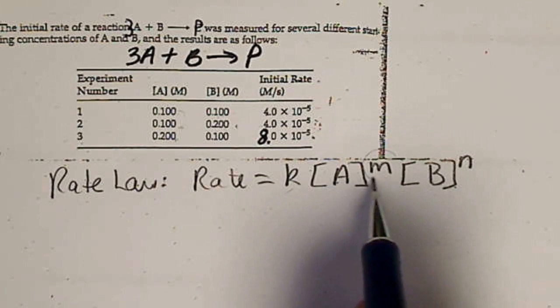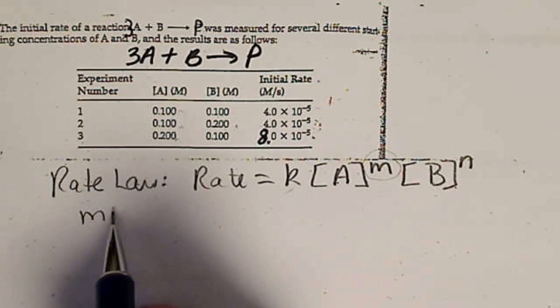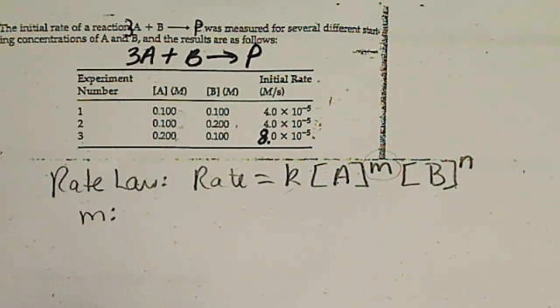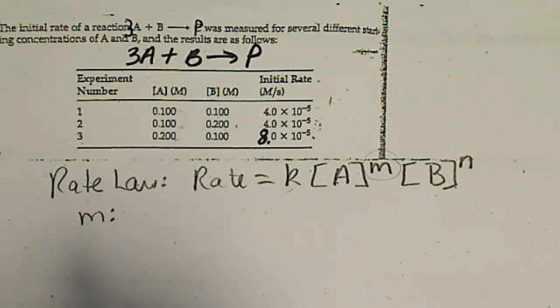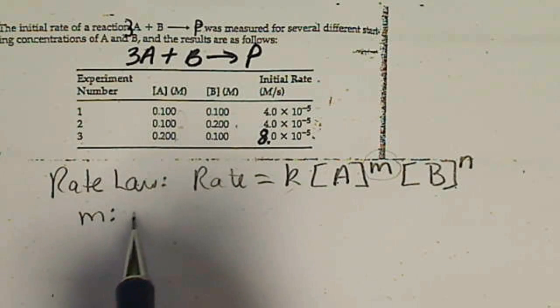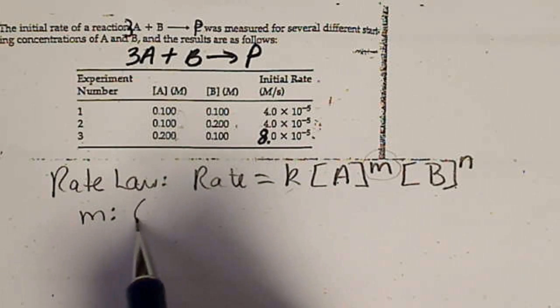So if we're looking for the M value, the power on A, we're going to look at when A varies and B stays the same. So we're going to look at, I'll write this down.